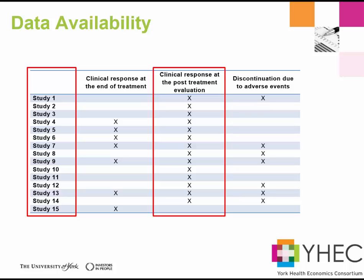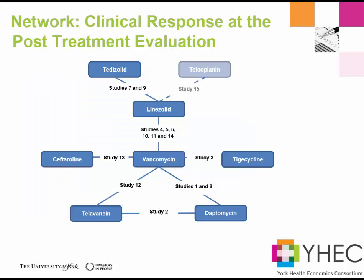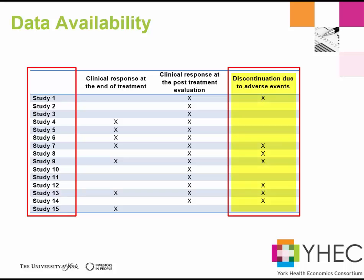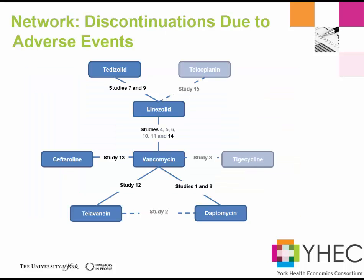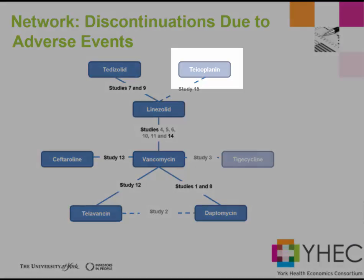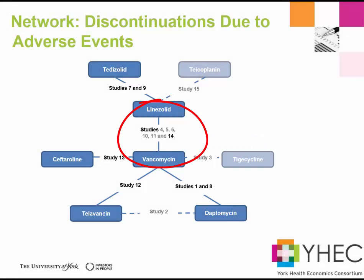For clinical response at the post-treatment evaluation, data from 14 of the studies is available — only study 15 did not report data for this outcome. Since study 15 was the only study that assessed teicoplanin, teicoplanin no longer features in that network. Data for discontinuation due to adverse events was reported by seven studies. For this outcome we lose two treatments — teicoplanin and tigecycline — and the link between linezolid and vancomycin is now informed by only one study. We also lose the only loop in the network as the link between telavancin and daptomycin is lost, so that estimate will only be informed by indirect information.